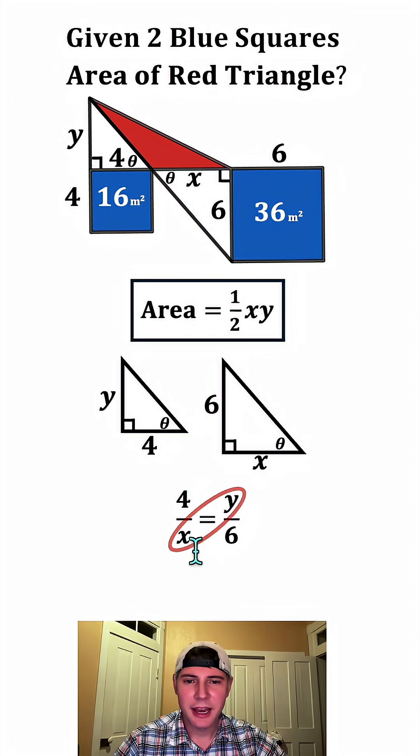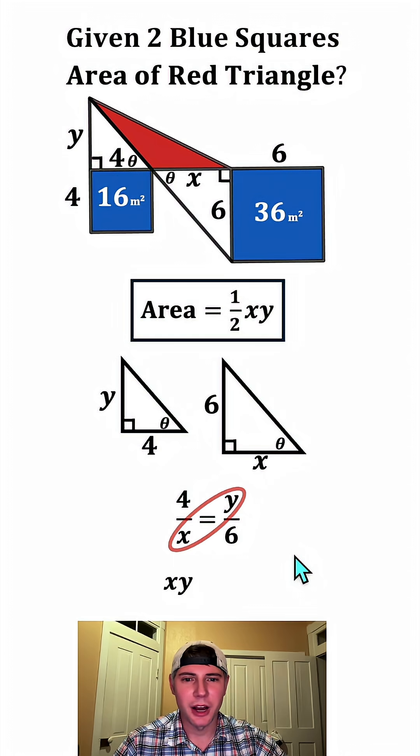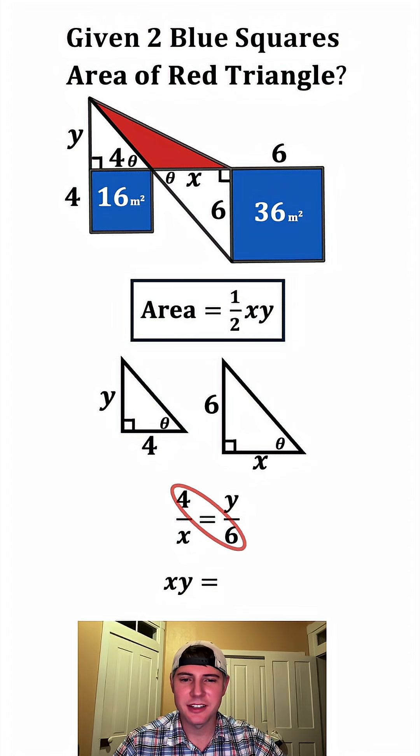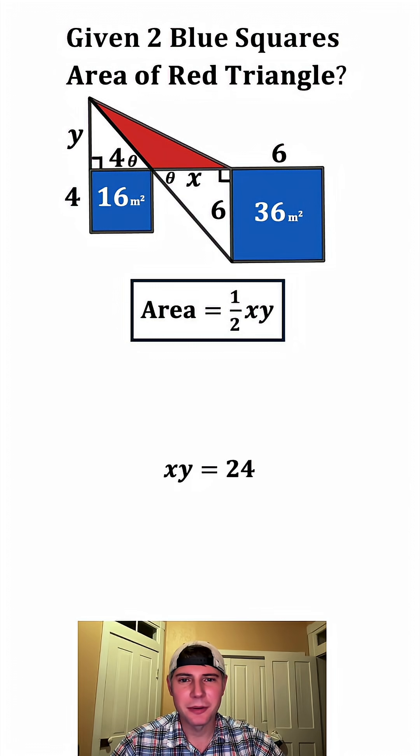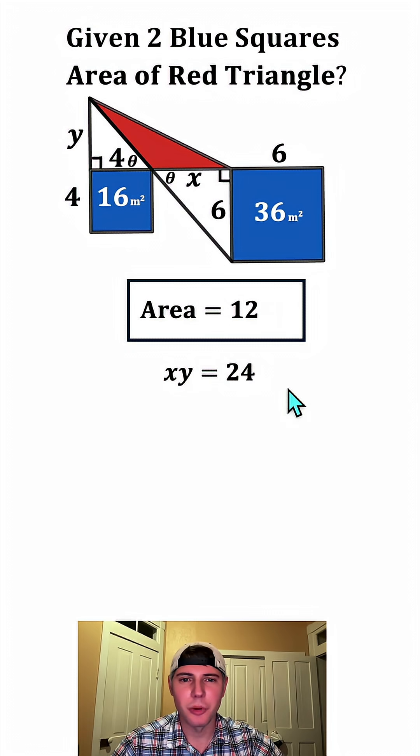And from here, we can cross multiply. X times y is equal to xy. And on the other side, 4 times 6 is equal to 24. And now we have x times y. That's all we really needed. So in the place of xy, let's plug in 24. One half times 24 is equal to 12.